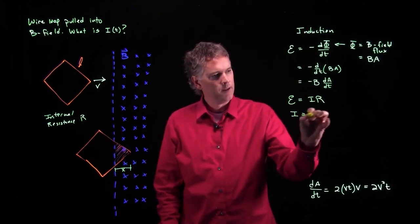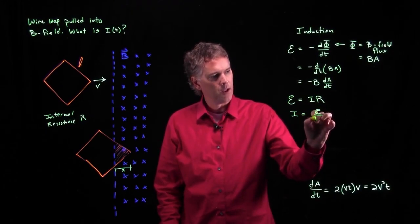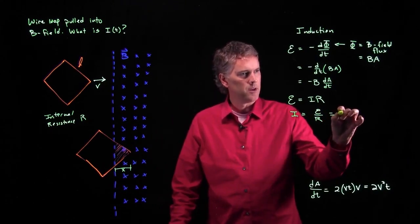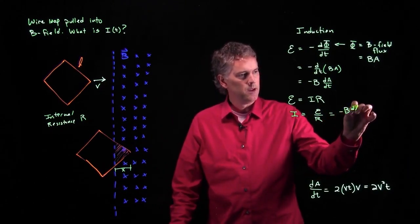We know that the EMF is equal to I times R. So what is I? It is epsilon over R. But now we know what epsilon is. It's negative B dA/dt.